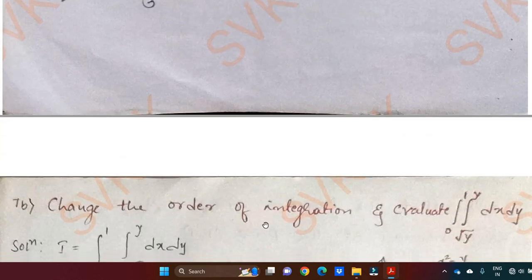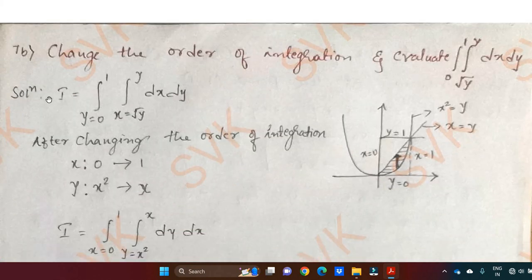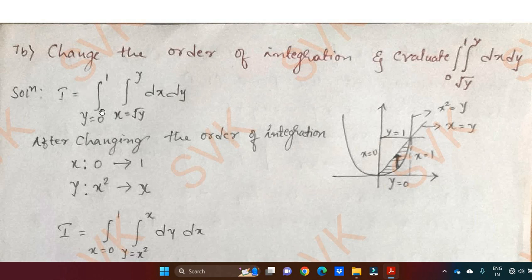Going on to the next question: change the order of integration and evaluate integral 0 to 1, integral square root of y to y, dx dy. Consider the given problem as I, equal to integral 0 to 1, integral square root of y to y, dx dy. As the inner integral has variable limits containing y, these limits stand for x. The constant limits stand for y. After changing the order of integration, we consider the graph. This is the curve x square equal to y, this is the line x equal to y, x equal to 1, x equal to 0, y equal to 0, y equal to 1 — forming the bounded region.